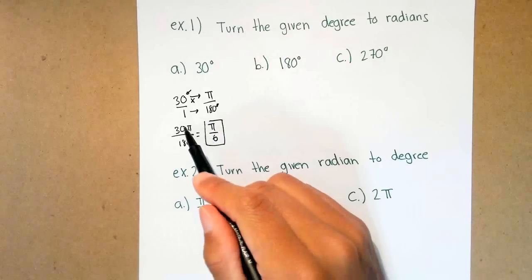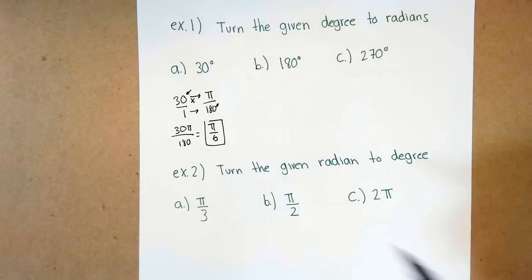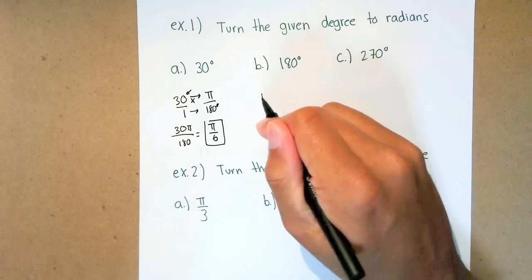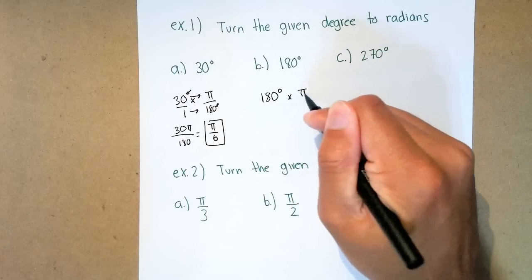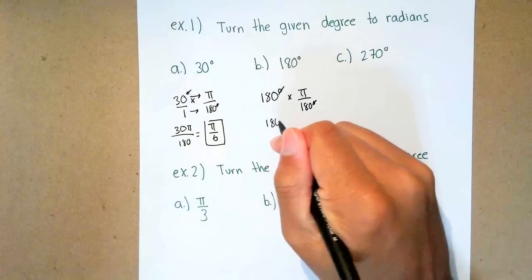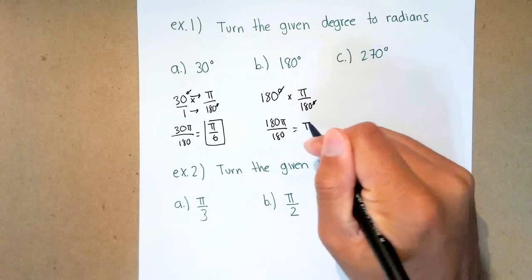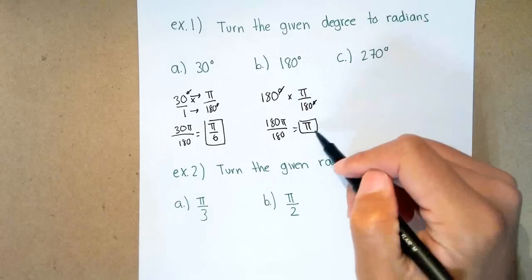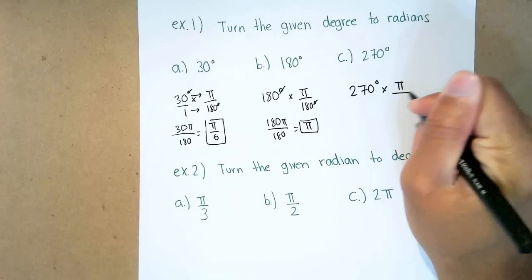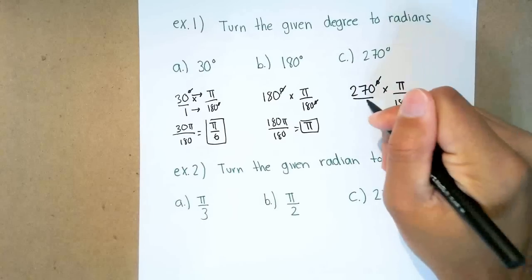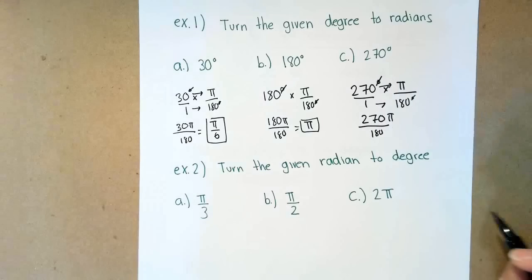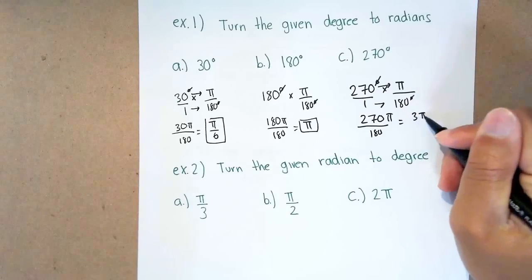One thing you're not going to do is simplify 30 over 180 to get a decimal — radians are easier to work with as a fraction. So use the fraction button on your calculator or just simplify. Next, 180 degrees: multiply by pi over 180. The degree symbols cancel out, giving 180 pi over 180, which simplifies to just pi. So 180 degrees corresponds to pi in radians. Last, 270 degrees times pi over 180 gives 270 pi over 180, which simplifies to 3 pi over 2.